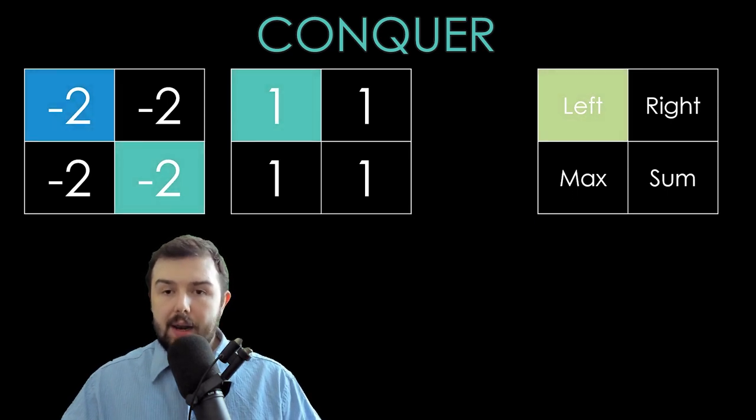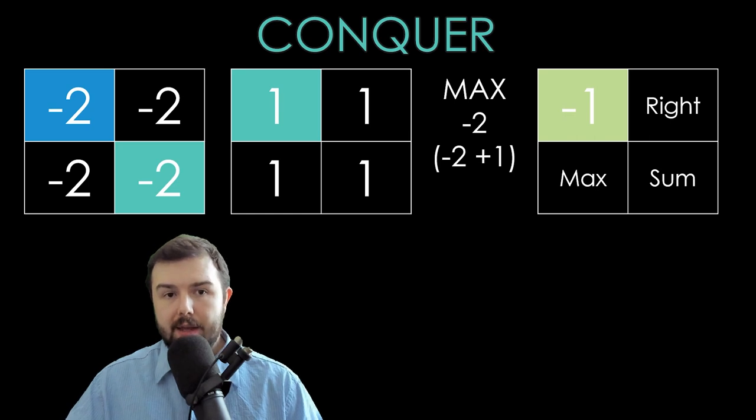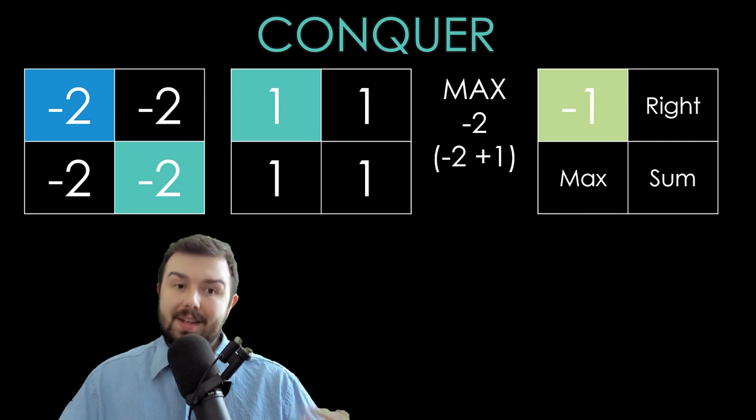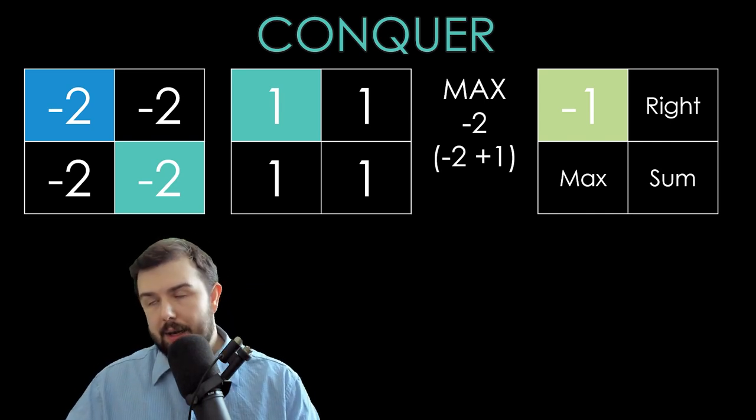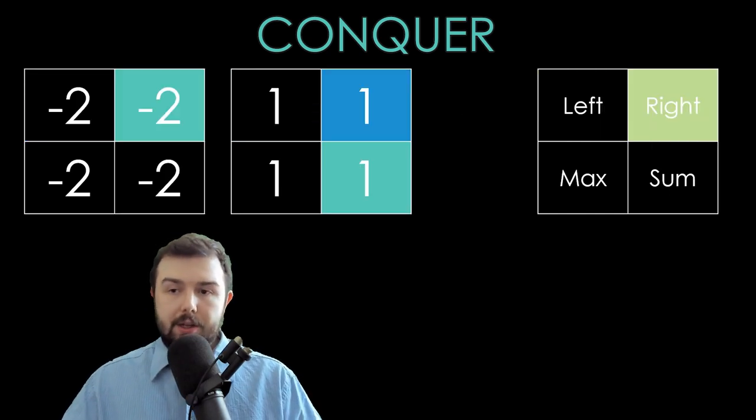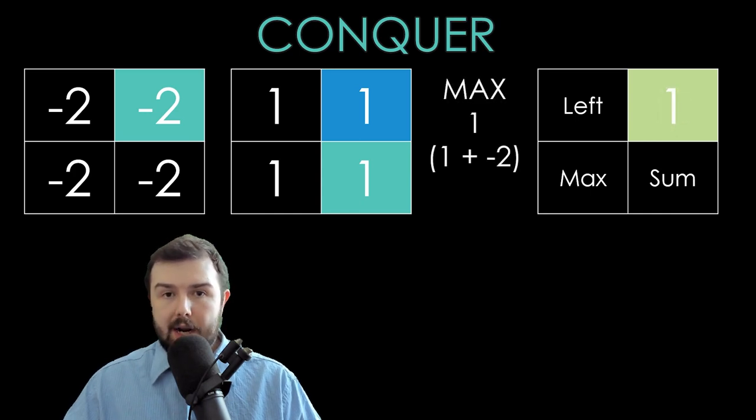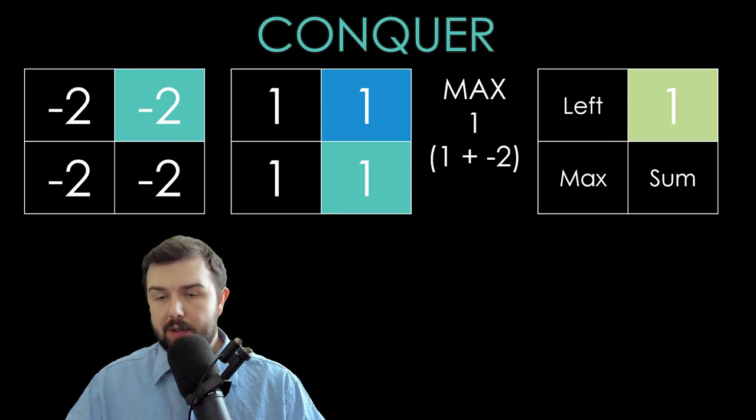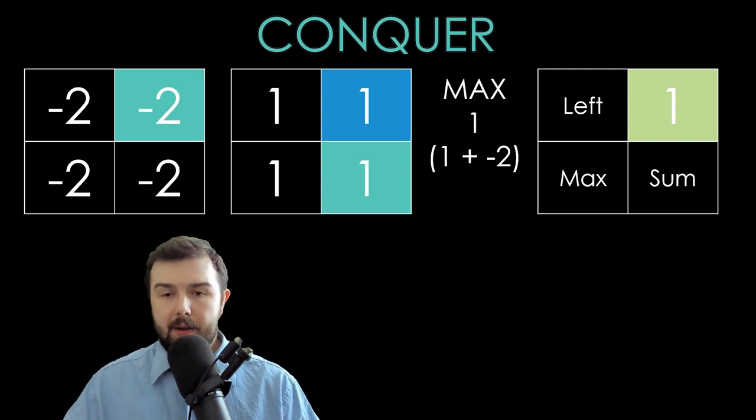To calculate the left part, we will need to get maximum of the left part of the first item and the left part of the second item. To calculate the right part, we do the same operation but vice versa. We either take the right part of the second value, or we take the sum of the right part of the first item and the sum of the second item, whichever is greater.